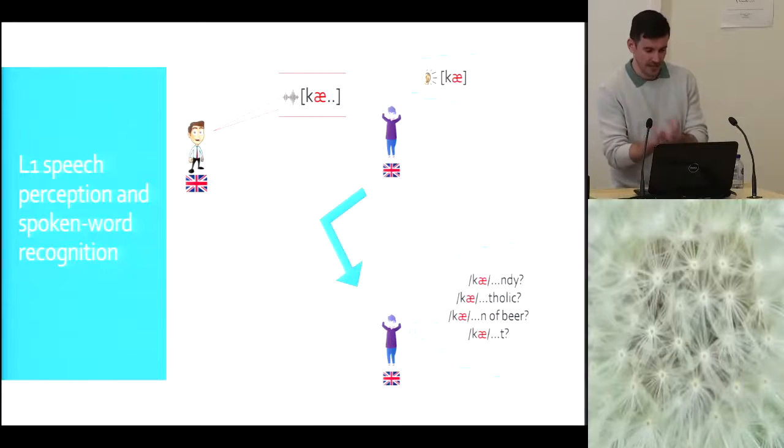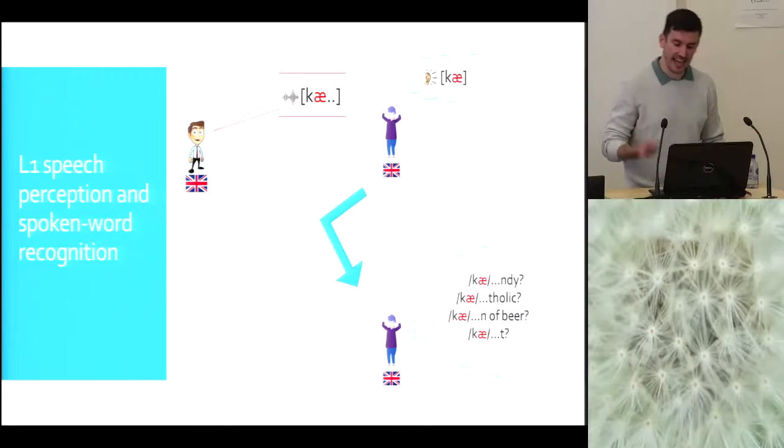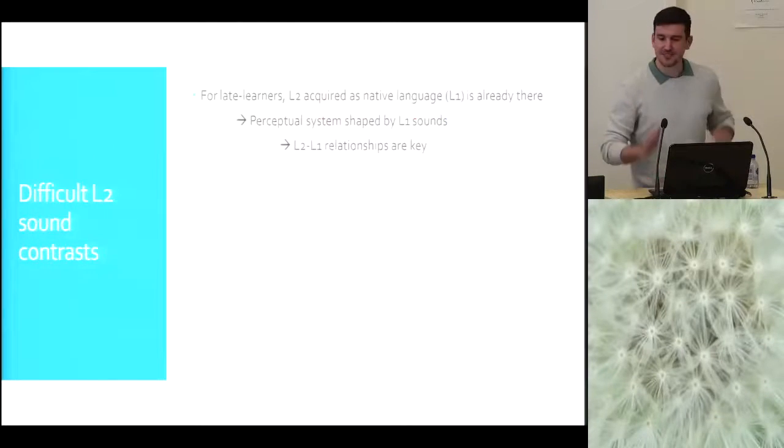There are two things that need to be done. First, that other native speaker of English needs to decode the acoustic signal into the segments that are being said. So recognize the first one as ka, the second one as ah, and then at the same time basically activate words in the lexicon that match this string of sounds. She may activate words like candy, catholic, cat, or my favorite kind of beer. That's all very easy, very nice, and we do this every day and it's not so effortful.